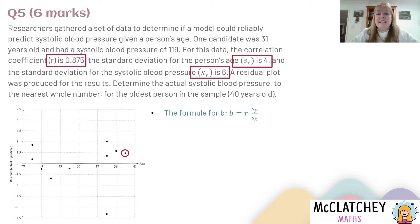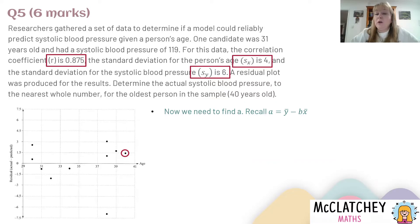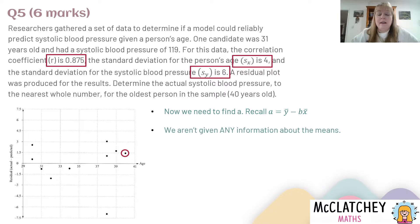We've got that information, so let's substitute it in: b is 1.3125. We've made some progress — in fact, we've just earned ourselves one out of six marks for correctly determining a b value. Now we're going to use that b value and try to find a. The formula for a is the mean of y take away b multiplied by the mean of x. But we're not given any information about the means in this question, so that might feel like a roadblock.